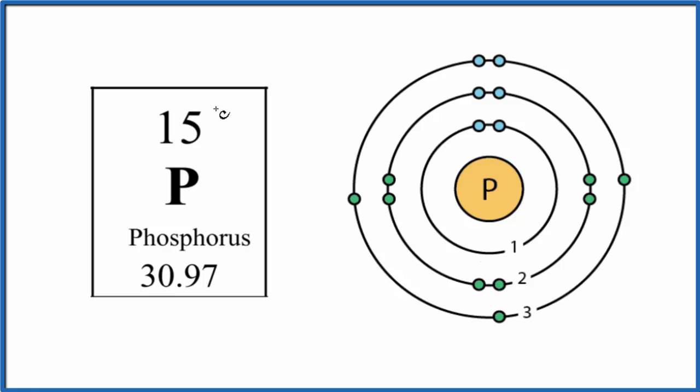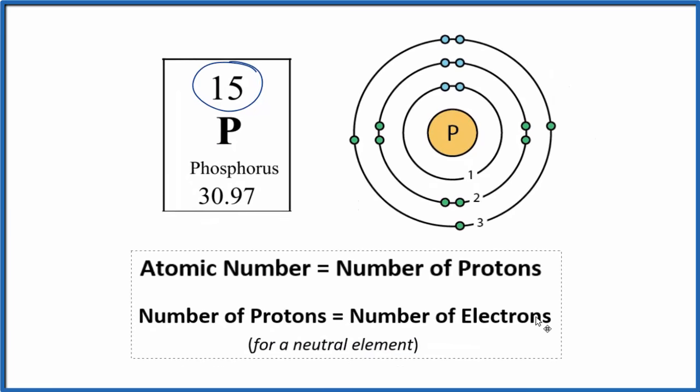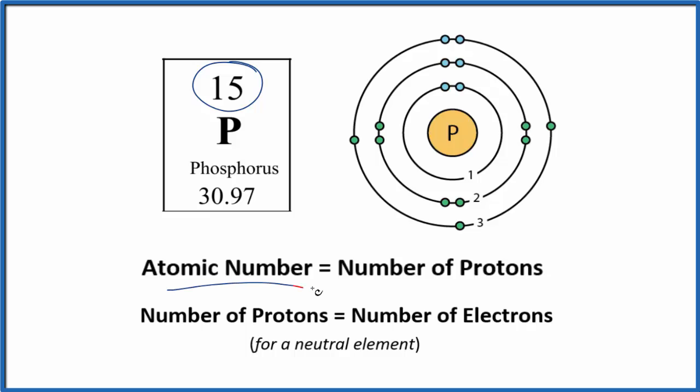So phosphorus on the periodic table, its atomic number is 15. The atomic number tells us the number of protons. So we have our atomic number of 15, that means we have 15 protons right here in the nucleus of the phosphorus atom.